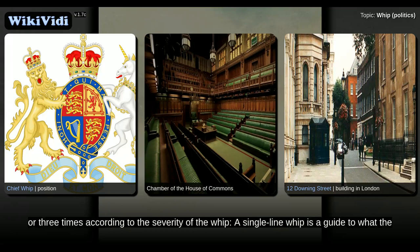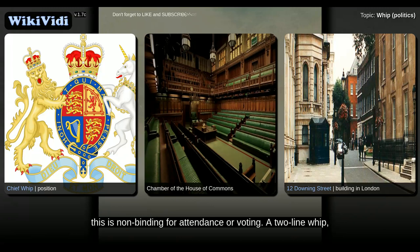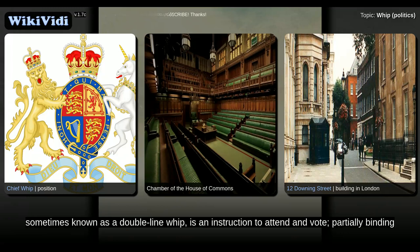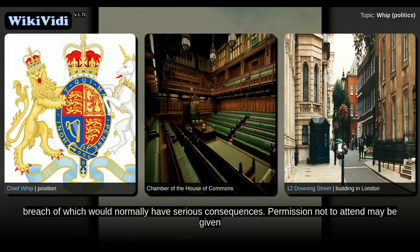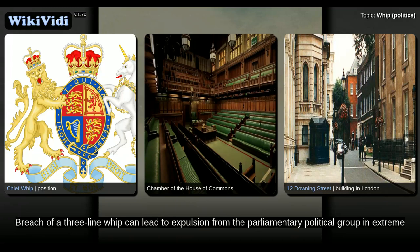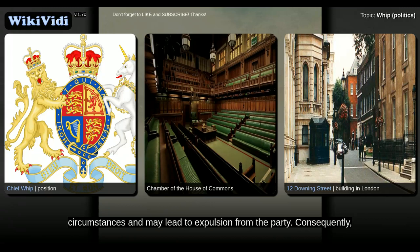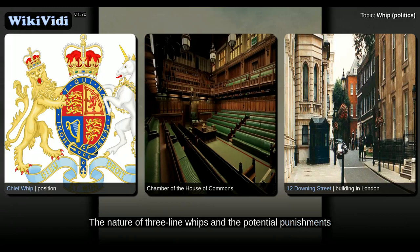A single-line whip is a guide to what the party's policy would indicate, and notification of when the vote is expected to take place. This is non-binding for attendance or voting. A two-line whip, sometimes known as a double-line whip, is an instruction to attend and vote, partially binding — attendance required unless prior permission is given by the whip. A three-line whip is a strict instruction to attend and vote, breach of which would normally have serious consequences. Permission not to attend may be given by the whip, but a serious reason is needed. Breach of a three-line whip can lead to expulsion from the parliamentary political group in extreme circumstances and may lead to expulsion from the party. Consequently, three-line whips are generally only issued on key issues, such as votes of confidence and supply.